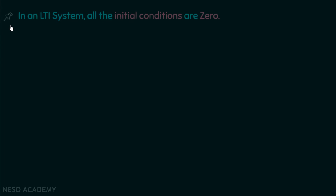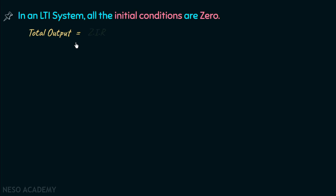The next important point is that in an LTI system, all initial conditions are 0. The total output in any system equals ZIR plus ZSR — zero input response plus zero state response. ZIR is the response of the system when input equals 0, while ZSR is the response when an input is applied. The zero input response arises from the initial conditions of the system.